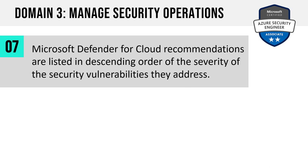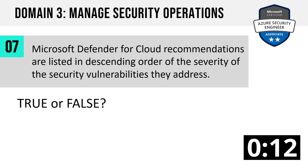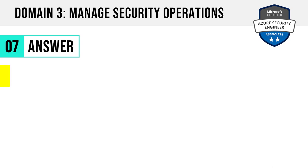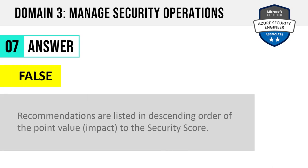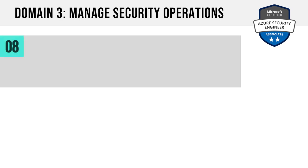Number 7. Microsoft Defender for Cloud recommendations are listed in descending order of the severity of the security vulnerabilities they address. True or false? Remember, Defender for Cloud used to be called Azure Security Center. The answer is false. Recommendations are actually listed in descending order of the point value — their impact to the security score.